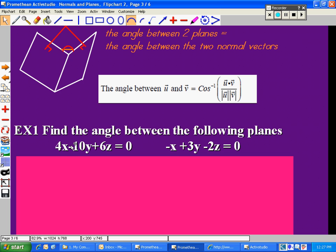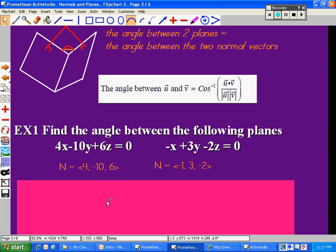Okay, so to find the normal vectors, you just take the coefficients a, b, c. So for the first normal vector, we get <4, -10, 6>. And the second normal vector is <-1, 3, -2>. So here are the two normal vectors.